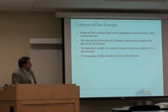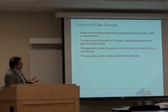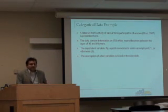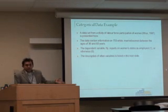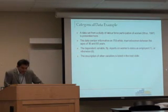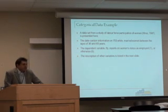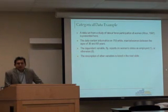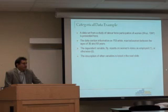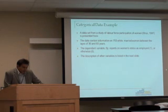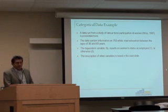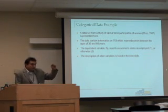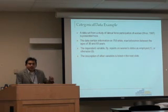Let's look at an example. I have here a dataset of labor force participation for women. The data are from 1987 — this is an actual dataset that resulted in a publication. The data consists of 753 white women who are married and are between the ages of 30 and 60 years. What we are interested in is seeing what determines their labor force participation: if they are working, they are coded as 1; if they are not working, it's coded as 0.